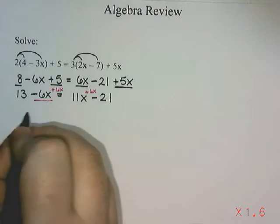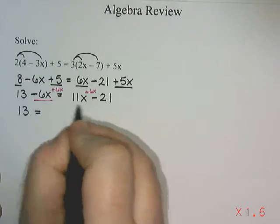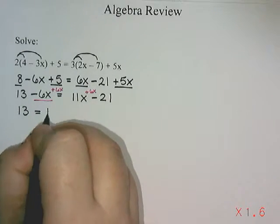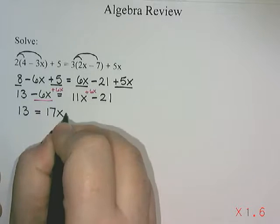So that leaves 13 on this side, and then 11x plus 6x is 17x, take away 21.